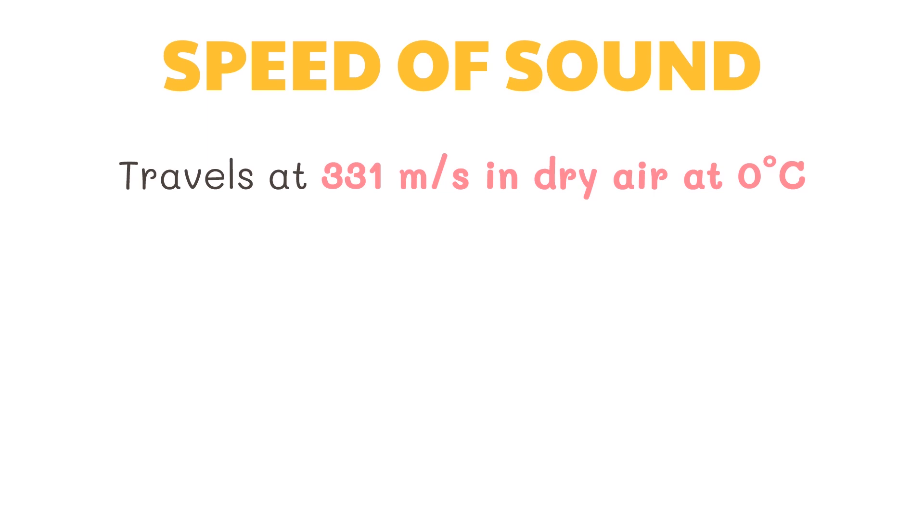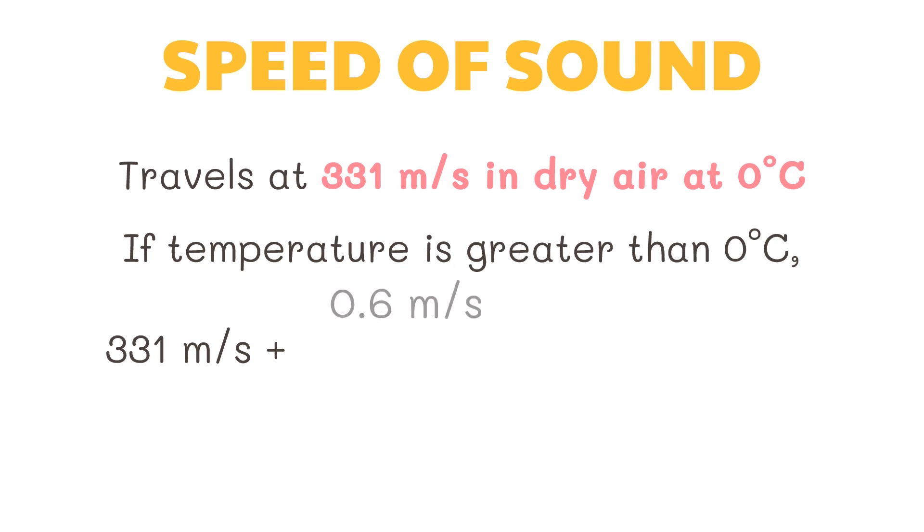This means that at temperatures greater than 0 degrees Celsius, speed of sound is greater than 331 meters per second by an amount of 0.6 meters per second over degree Celsius multiplied by the temperature of the medium. In equation form, speed of sound is equal to 331 m/s plus 0.6 m/s over degree Celsius times temperature.